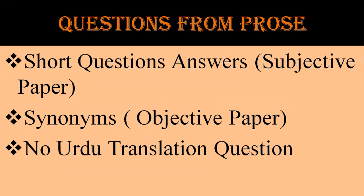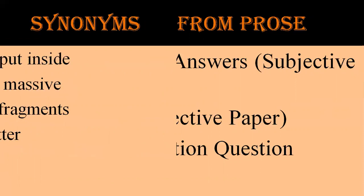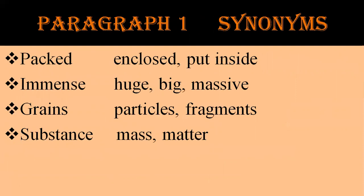Questions from prose will be short question answers in the subjective paper, and synonyms will be in the objective paper. There will be no Urdu translation question in your paper. Now I will first read the text from your textbook, then tell you the synonyms of difficult words in each paragraph, and after reading the text I will do the explanation of that paragraph. So let's start our lesson.